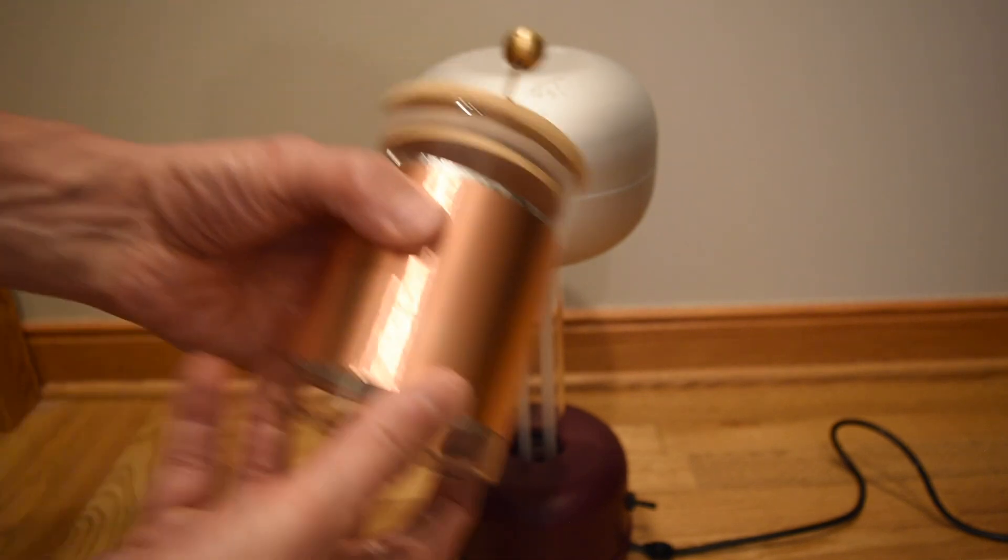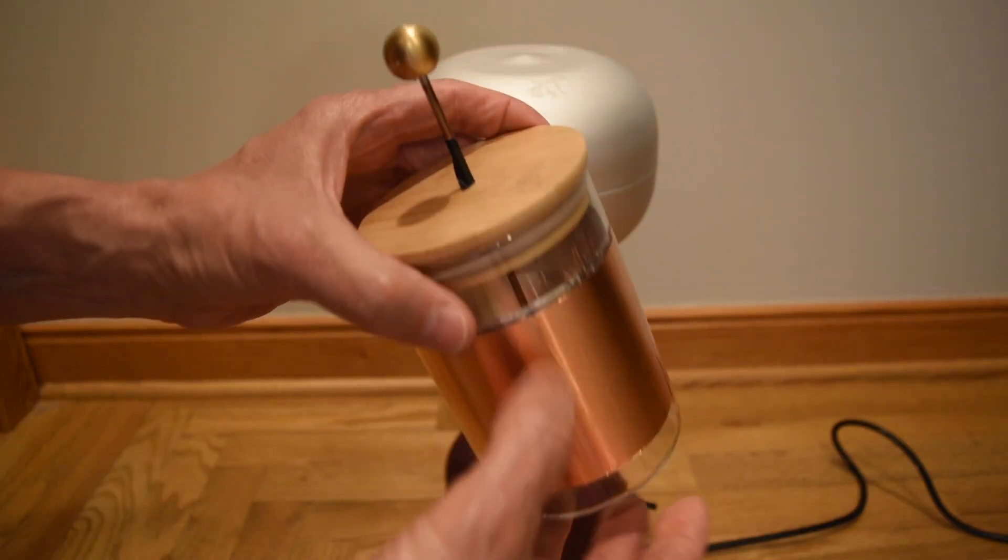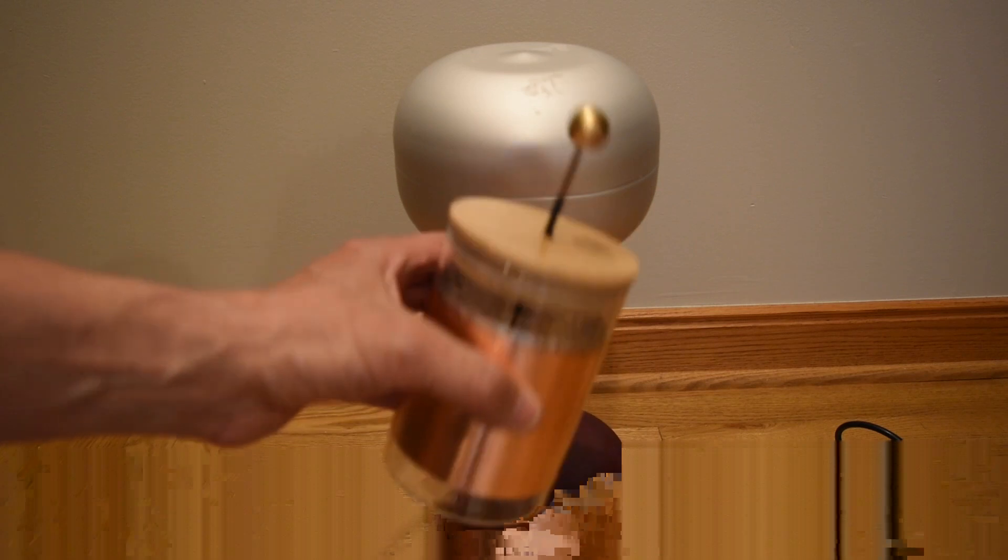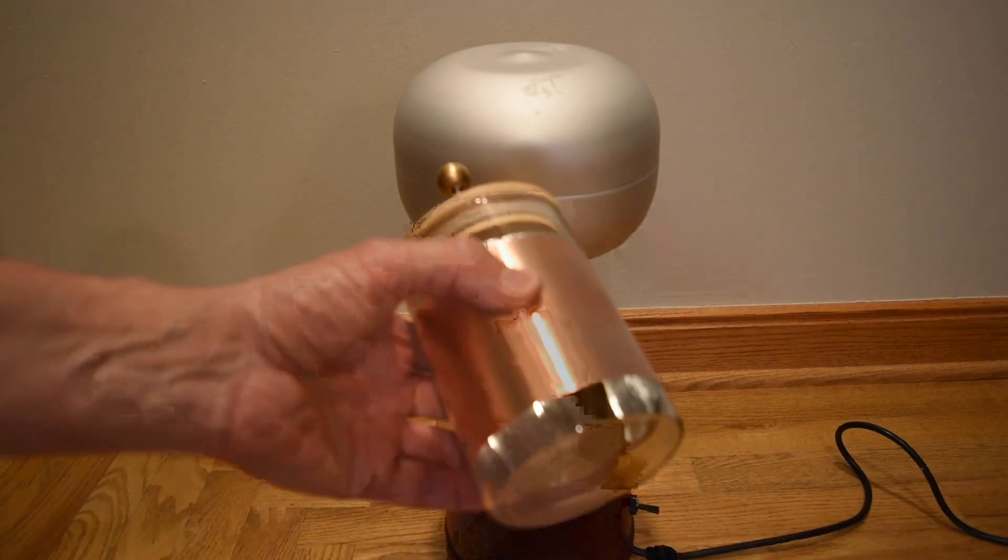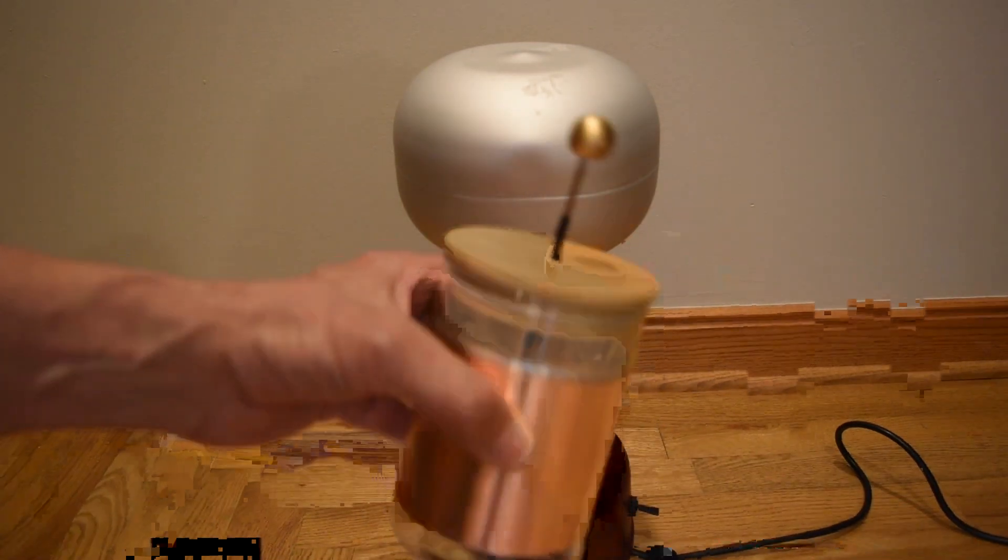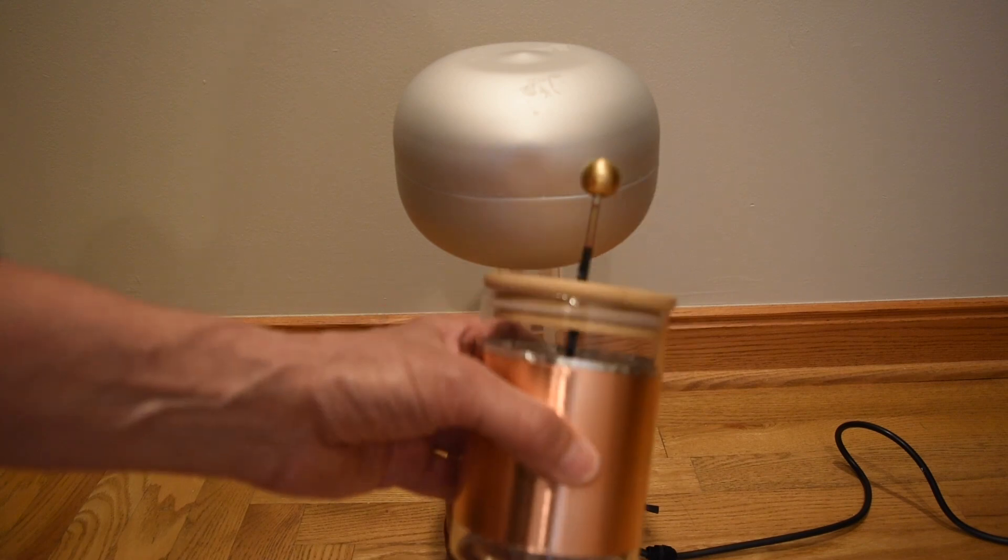Whereas for our Leiden jar, the two conductors are just separated by this thin piece of glass from the jar. The Leiden jar capacitor we constructed has about a thousand times the capacitance of our Van de Graaff generator. So I don't want to feel the sparks from our Leiden jar.